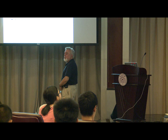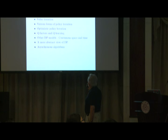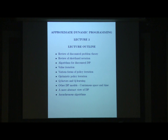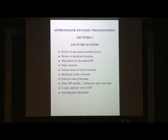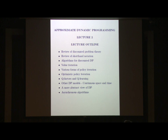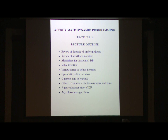I'd like to welcome you to this second lecture, second out of six, on approximate dynamic programming. Last time we talked about exact dynamic programming: finite horizon problems over N stages, and then infinite horizon problems over an infinite number of stages, and we focused on discounted problems. We're going to review this discounted infinite horizon formulation and the shorthand notation I introduced. After the review, we'll focus on algorithms for exact discounted DP: value iteration, various forms of policy iteration, one particular type called optimistic, which will come up again. Then I'll talk about Q factors and Q learning, an introduction.